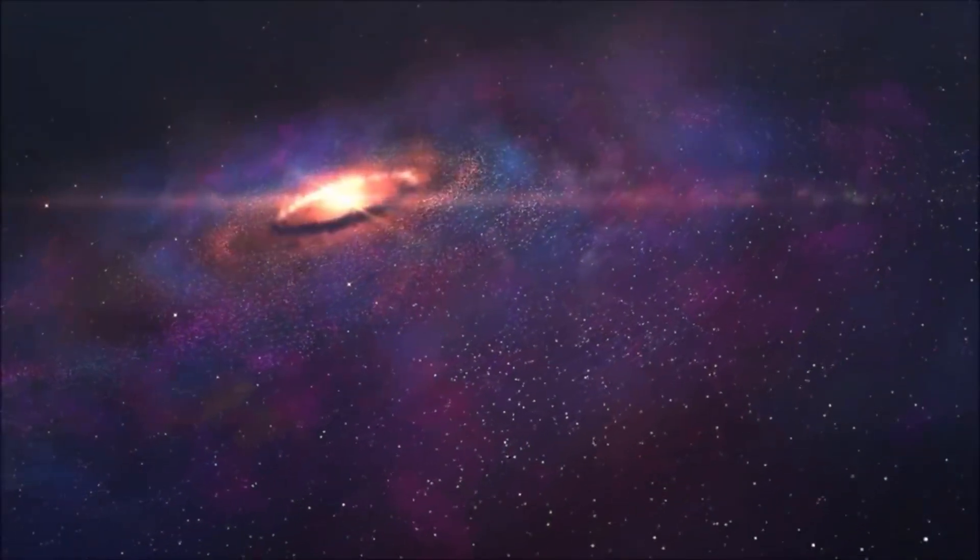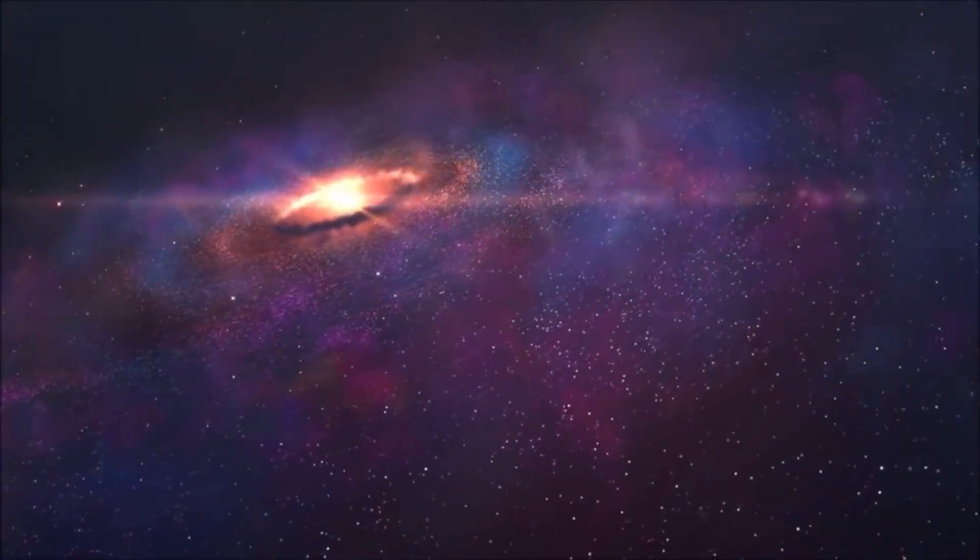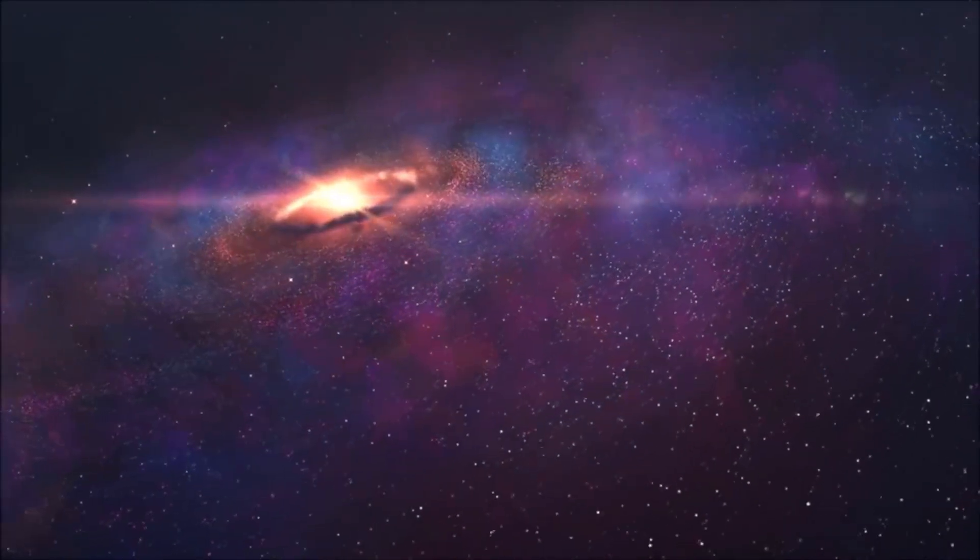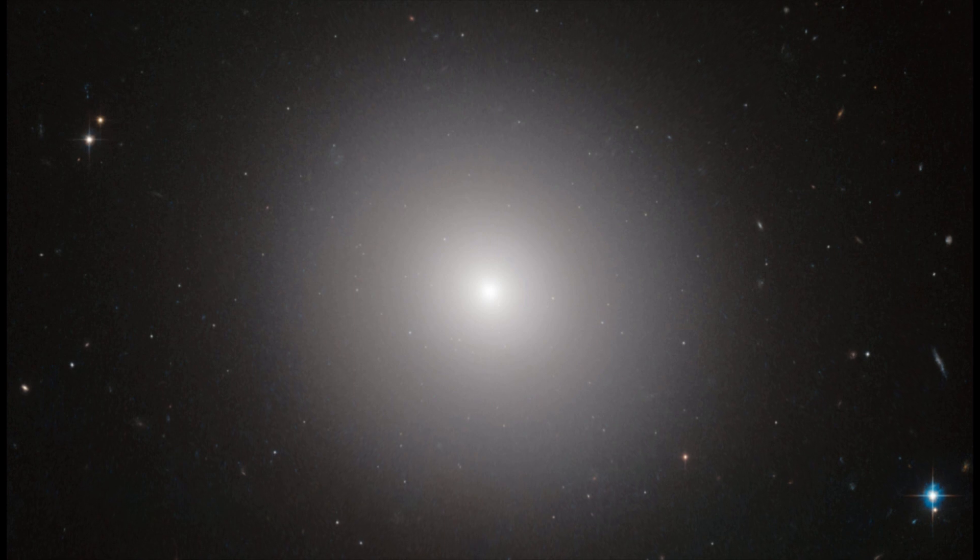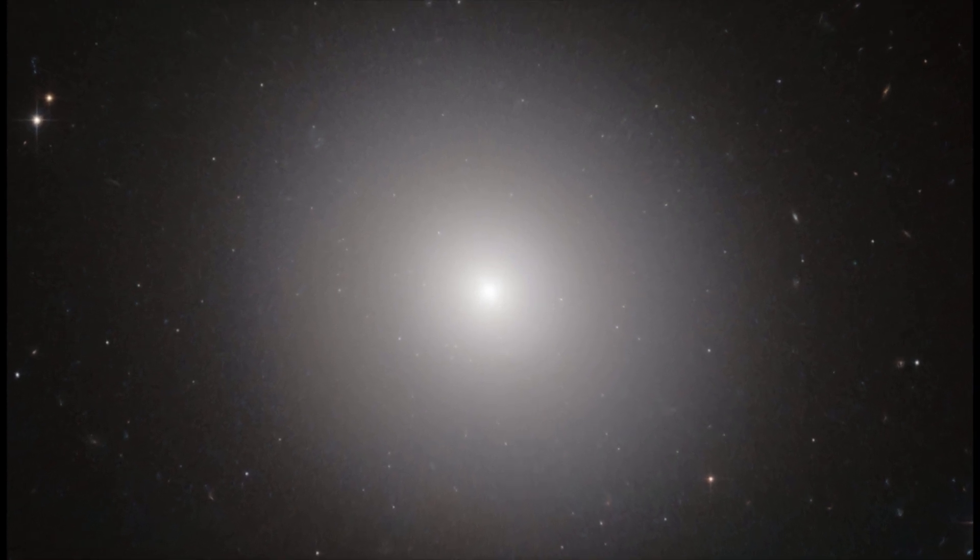Elliptical galaxies lack the swirling arms of their more well-known counterparts, spiral galaxies like the Milky Way. Instead, they bear the rounded shape of an ellipse, a stretched out circle.